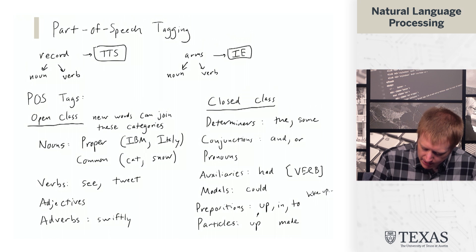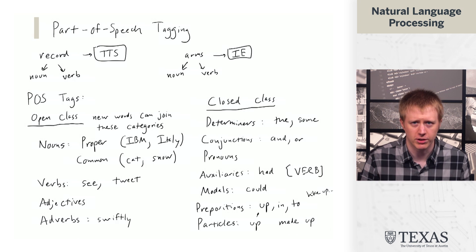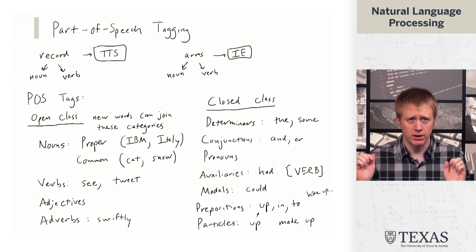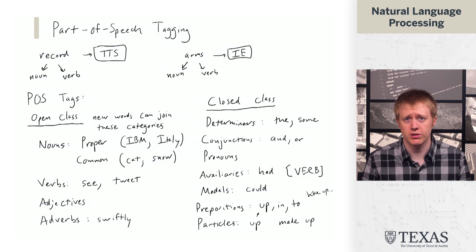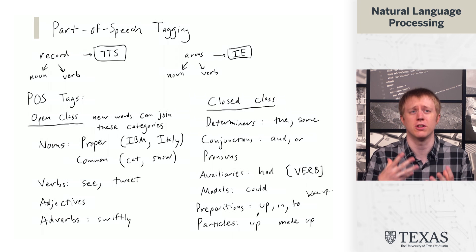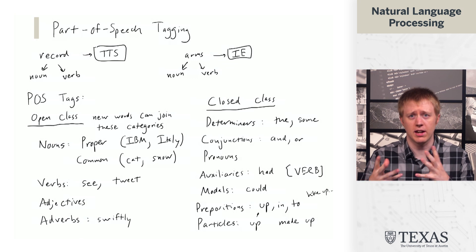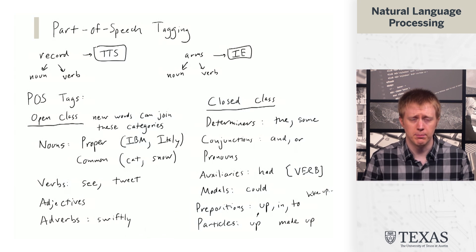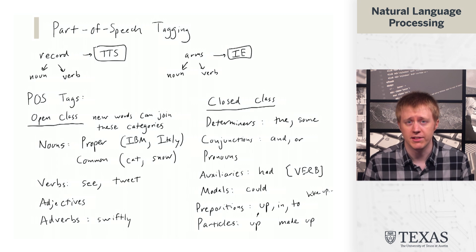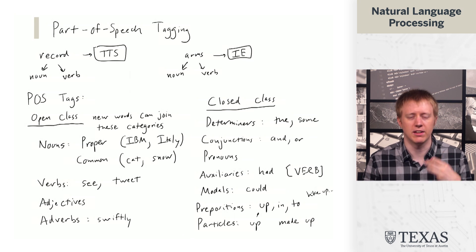There's also a notion of what are called particles, which overlap heavily with the prepositions but are used in a slightly different way. For example, when we say I made up the story, this is what's called a verb particle construction. There's not really a spatial aspect associated with making up a story. It's really this word that's combining with the verb in order to get its semantics. So in contrast with the preposition, it's behaving a little bit differently, but the words that actually get used overlap there. This is an example of why things are ambiguous from a part-of-speech perspective.